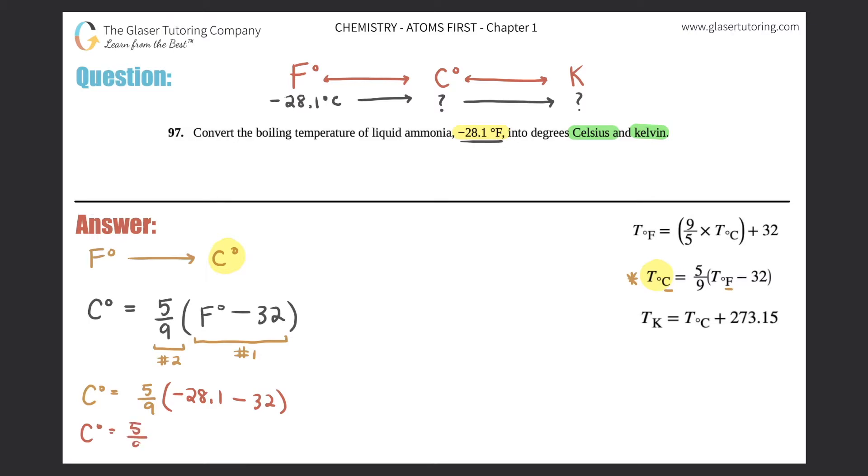So Celsius would equal 5/9... and now before we even do this, let's figure out our sig fig plan of attack here. This 32 is an exact number. Remember those exact numbers are usually seen as conversions, but they are also numbers that are in formulas as well. The 32, the 273.15, they're all exact numbers. So is the 5/9. They do not count for sig figs.